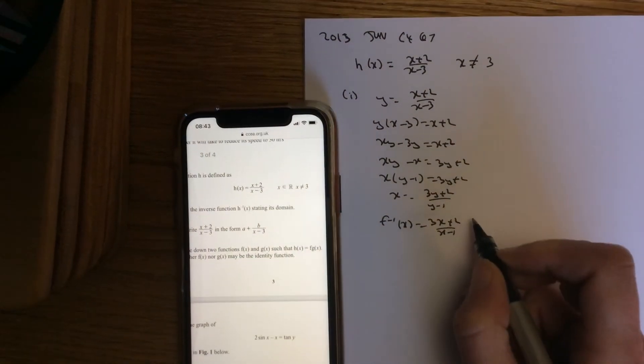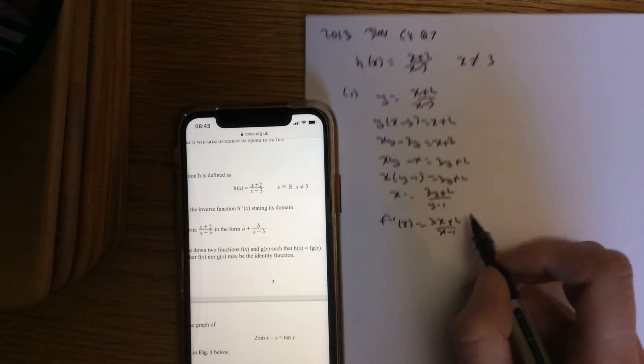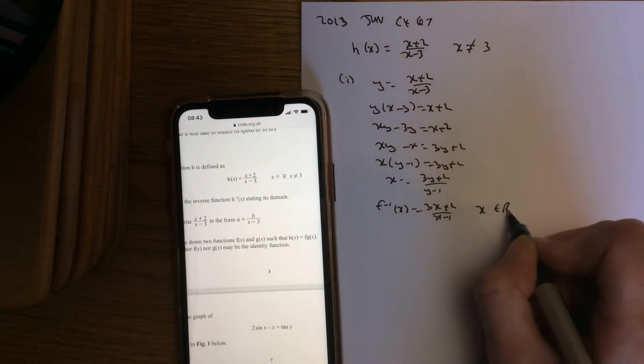State its domain. If you look at the range of the original function, it could be any number, so x belongs to the real numbers except it cannot equal 1.